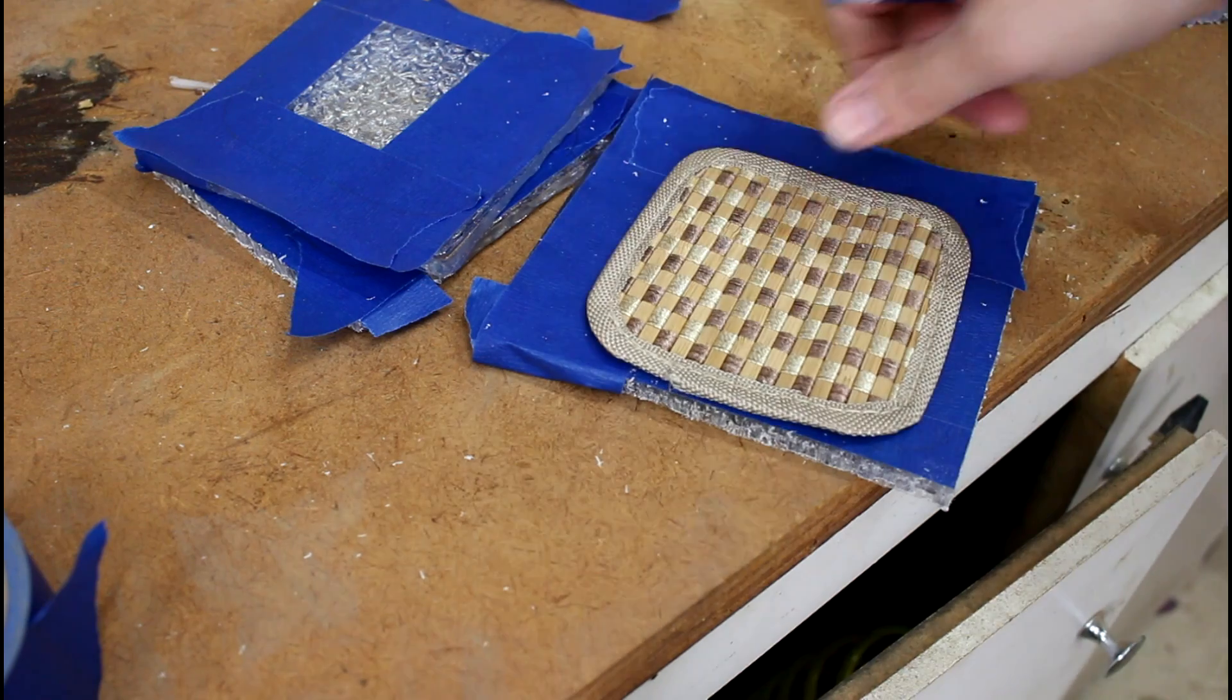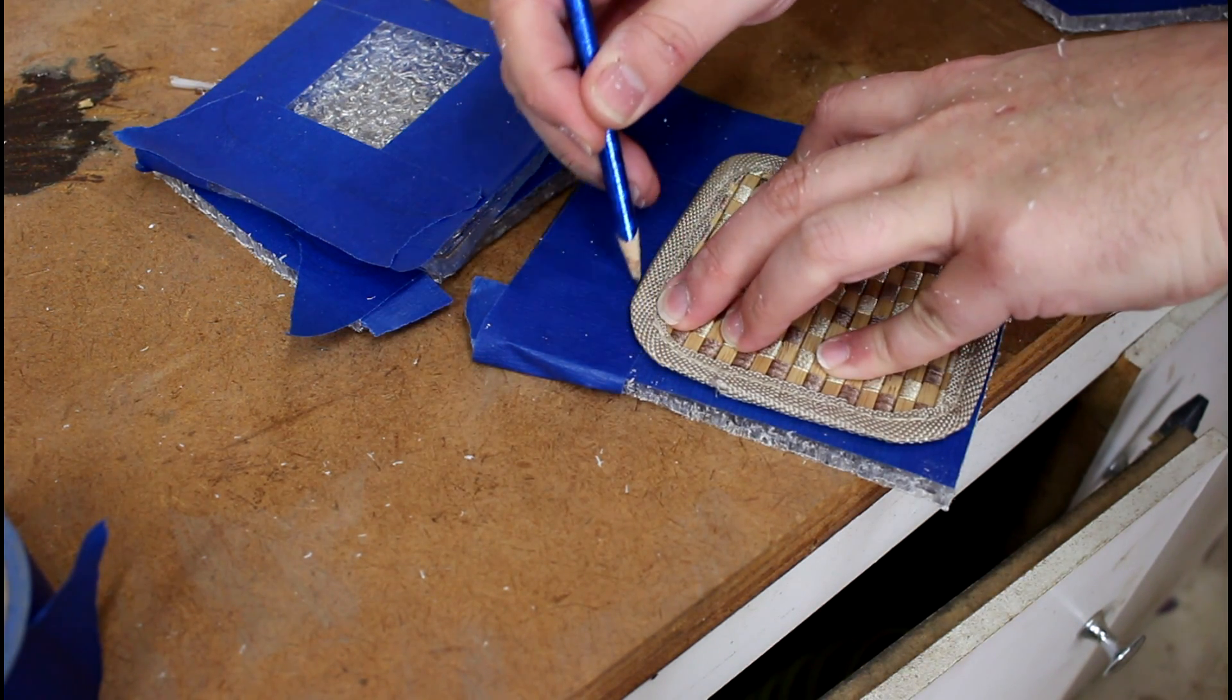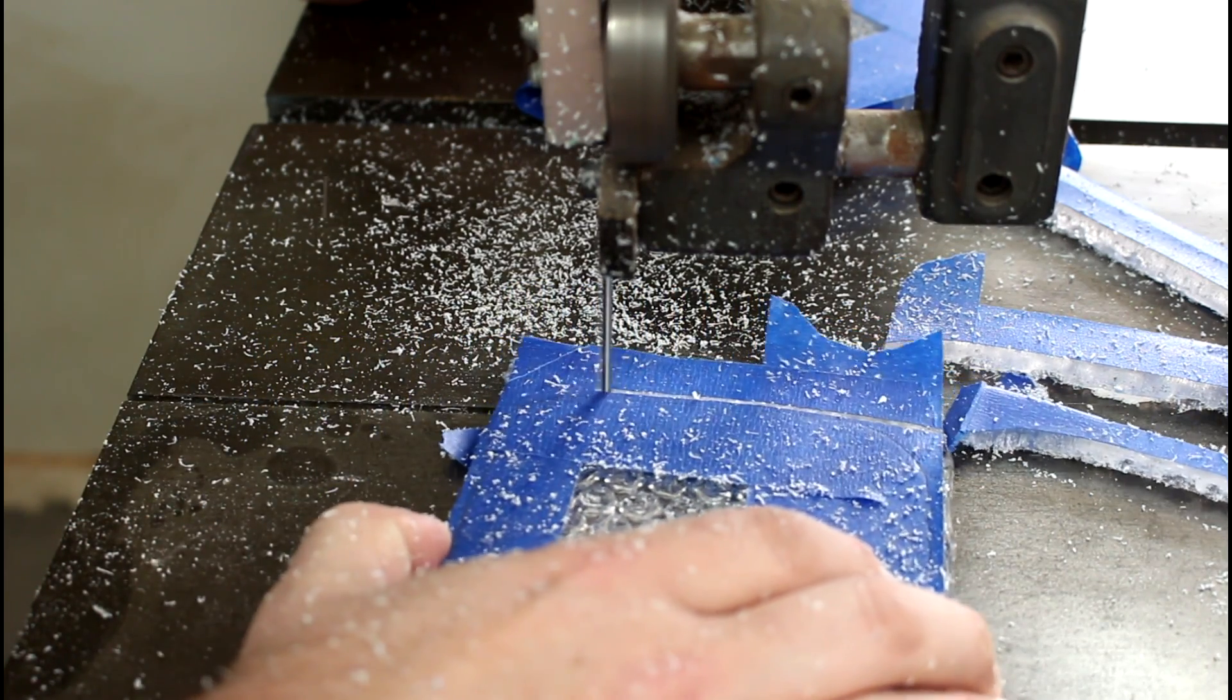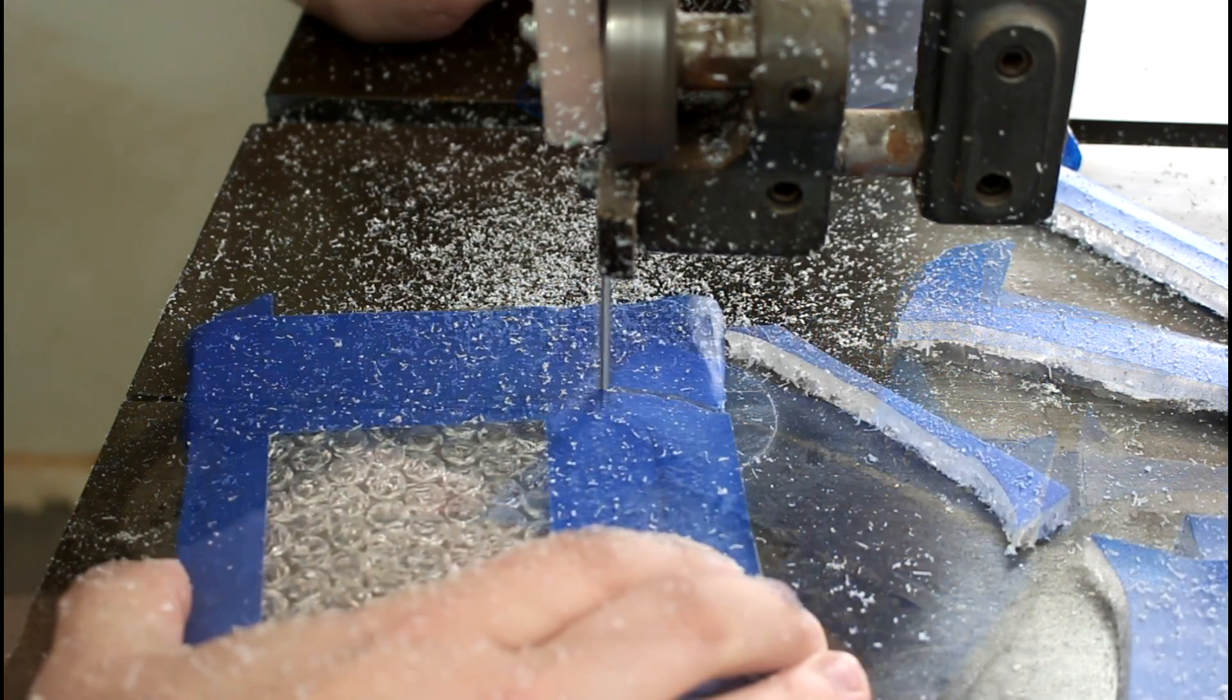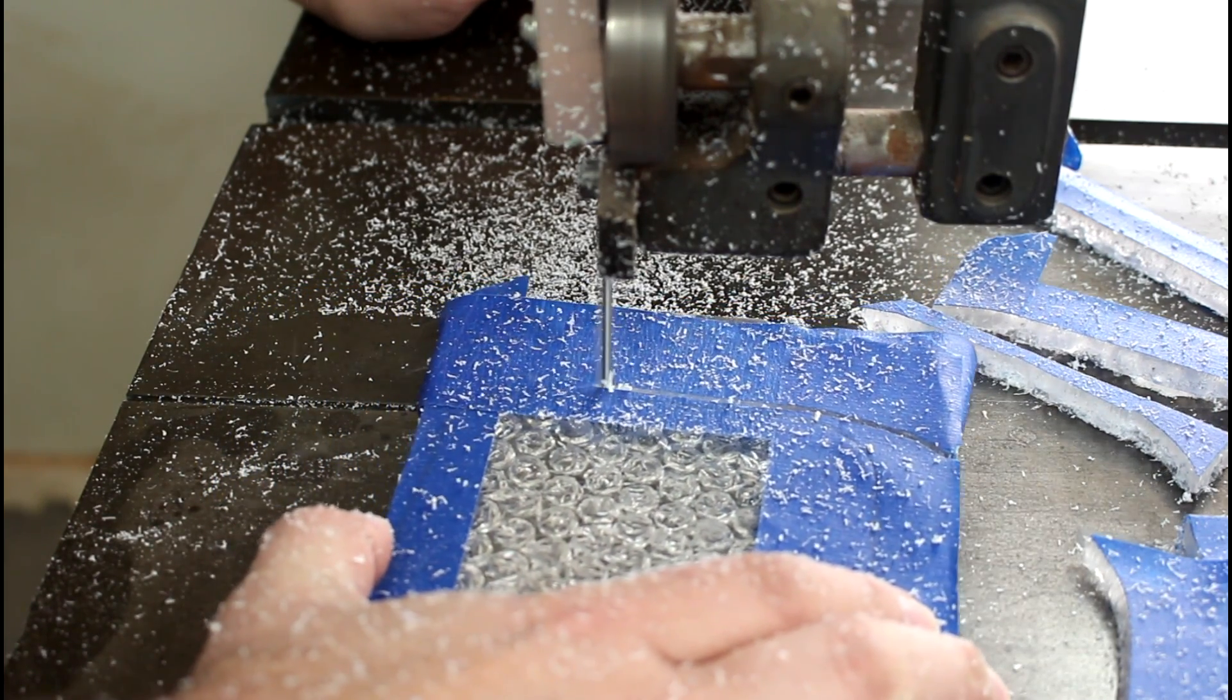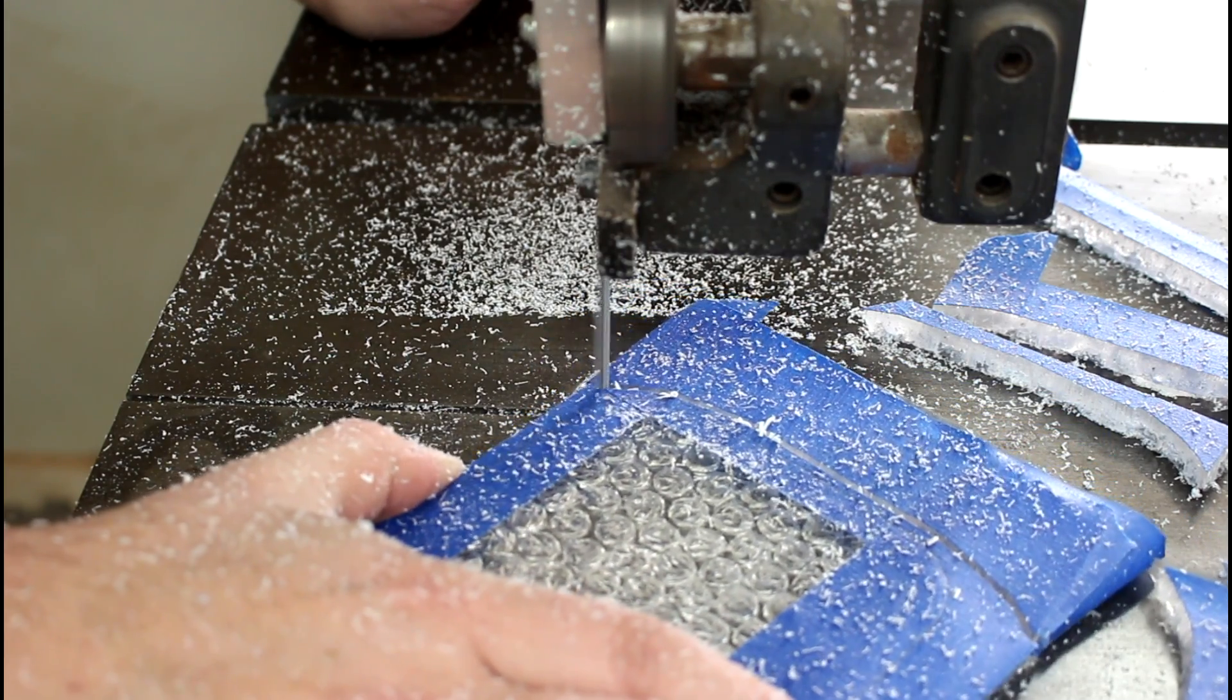Once that's done, I can take my template and use it to completely trace around each one of these. Now we'll just go over to the sander to clean up the edges.